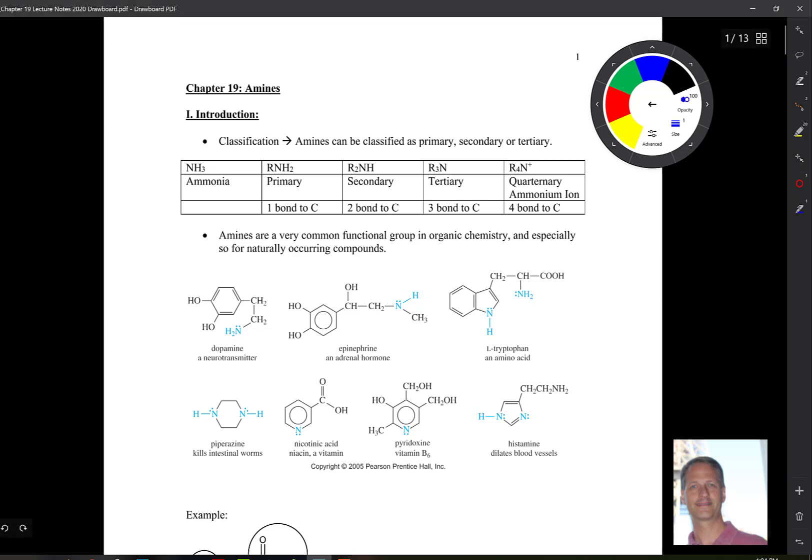So amines can be classified into primary, secondary, tertiary, quaternary, or just ammonia by themselves. So let's take a look down here below. So ammonia, of course, is just NH3.